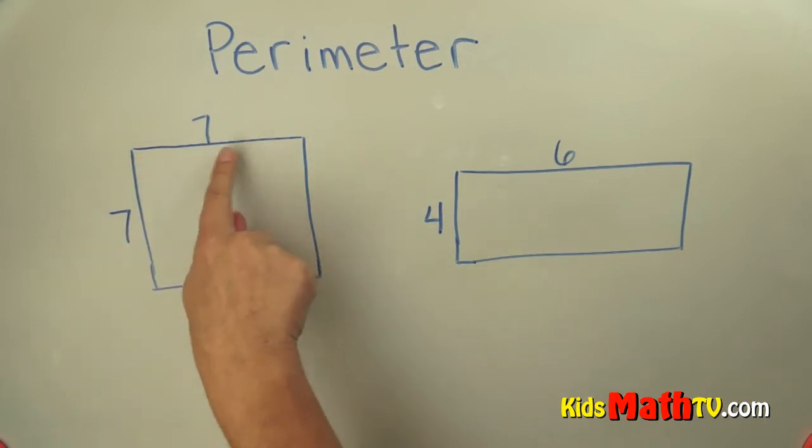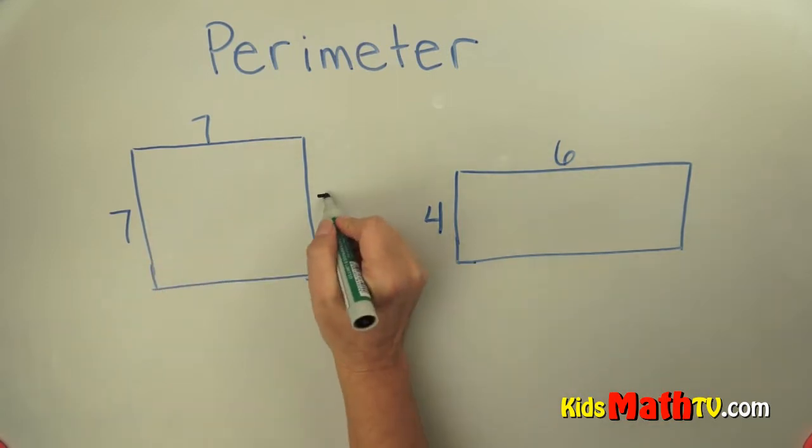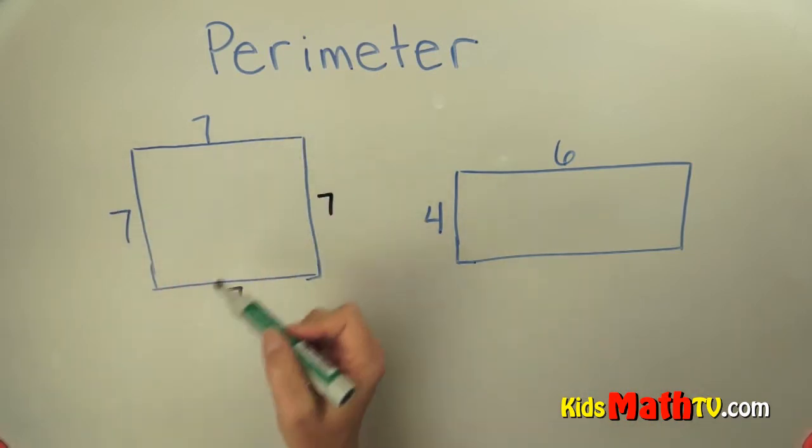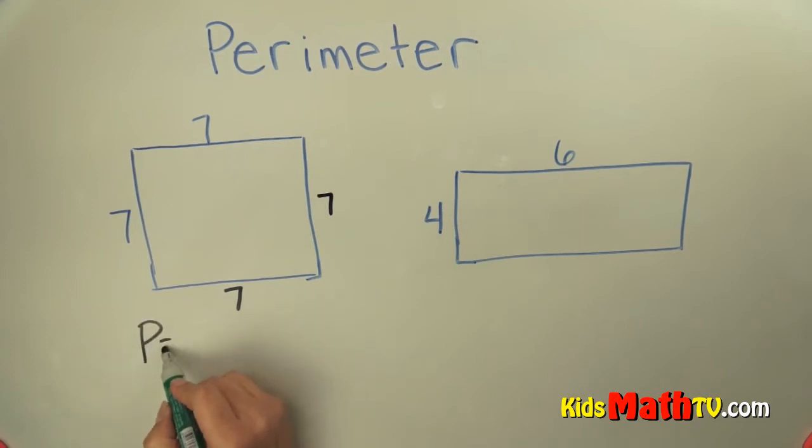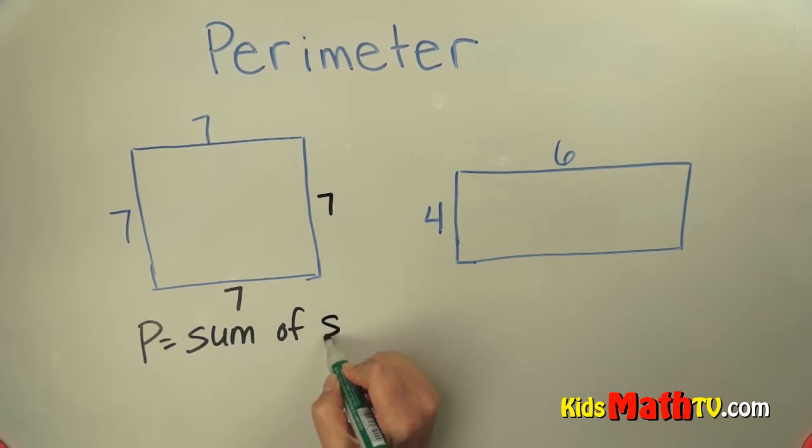Well, this square, I know it's a square because it's the same on both sides. So this means this is 7 and this is 7. And I don't know if it's meters or inches, so I'm just going to call them units.